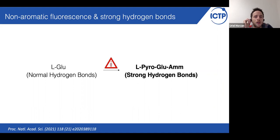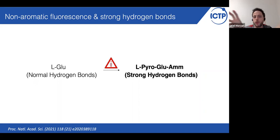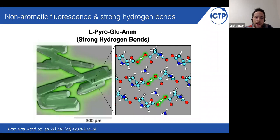In order to see if there is a link between this non-aromatic fluorescence and the presence of strong hydrogen bonds, this group at Cambridge synthesized a compound that we call L-pyroglutamine ammonium, which is basically a thermal decomposition of L-glutamine. The main difference between the two — both are solid systems — is that in the case of L-glutamine, the crystal contains a normal hydrogen bond network, whereas in the case of L-pyroglutamine ammonium, we have a very strong hydrogen bond network. As a consequence, while L-glutamine is completely non-fluorescent, L-pyroglutamine ammonium shows fluorescence in the visible range.